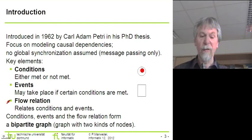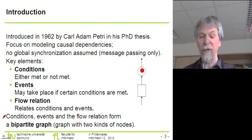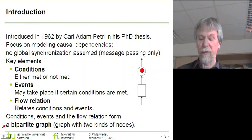And then the third kind of element is the flow relation. The flow relation relates conditions and events, so it connects conditions with events. Conditions, events and the flow relation form a so-called bipartite graph, which means they form a graph with two kinds of nodes.